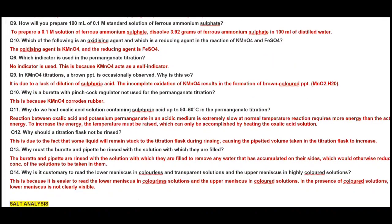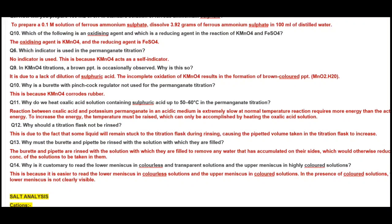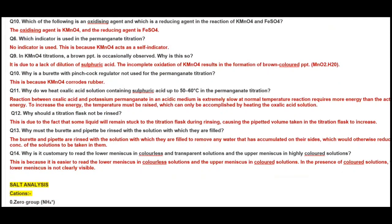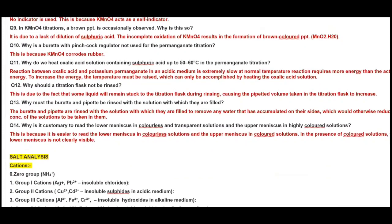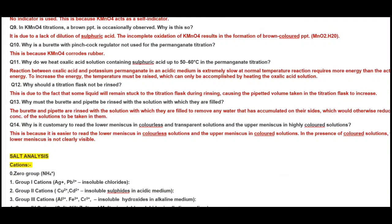Which of the following is an oxidizing agent and which is a reducing agent in the reaction of KMnO4 and ferrous sulfate or KMnO4 and Mohr salt? The oxidizing agent is KMnO4 which itself gets reduced to manganese 2+. Reducing agent is ferrous sulfate which itself gets oxidized to ferric ion. Which indicator is used in permanganate titrations? No indicator. KMnO4 itself is a self-indicator. In KMnO4 titration the brown ppt is occasionally observed, why is this so? This is due to lack of dilute sulfuric acid. If you forget to add dilute sulfuric acid then incomplete oxidation of KMnO4 results into formation of MnO2 which is in the form of a brown colored precipitate. This will mask your endpoint.